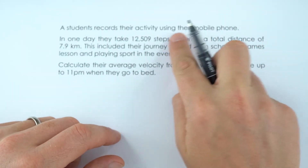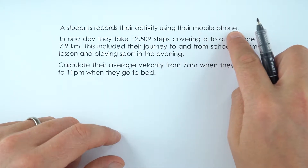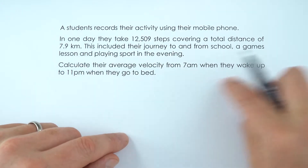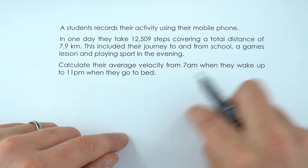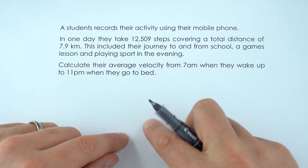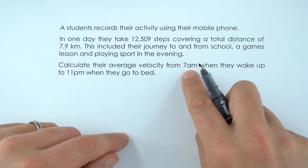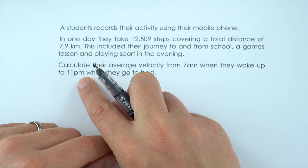So we've got a student recording their activity using a mobile phone. It gives a number of steps on how far they've gone, including going to school, doing whatever at school, and then doing stuff in the evening. It also has a time that we're looking at between 7 o'clock in the morning and 11pm at night.